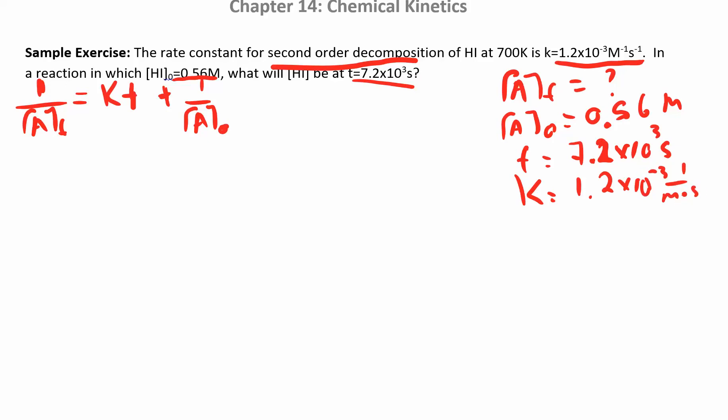Okay. So I'm trying to find one over, I'm going to solve for one over A at some time first. Just plug that in. 1.2 times 10 to the 3 seconds. So seconds cancel seconds. I end up with one over molar plus one over A initial, which is 0.56. So one over 0.5. So that's a number.